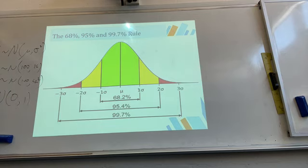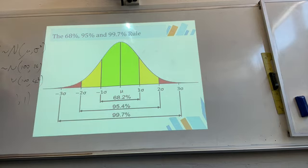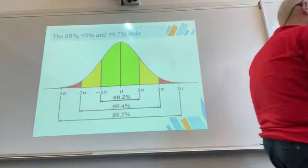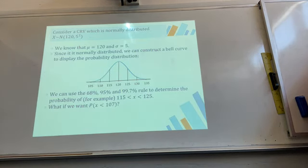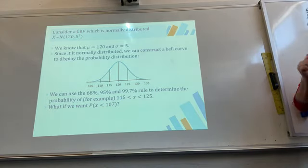Today we're going to find probabilities for values in between — such as between one and two sigma. You can use ClassPad with either the actual data or the standardized data. Consider a continuous random variable which is normally distributed.